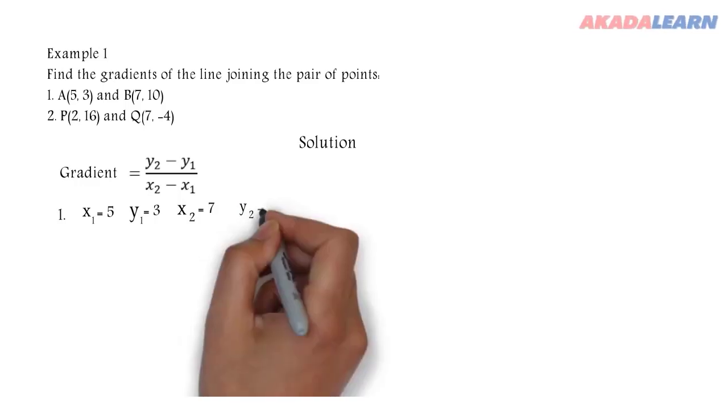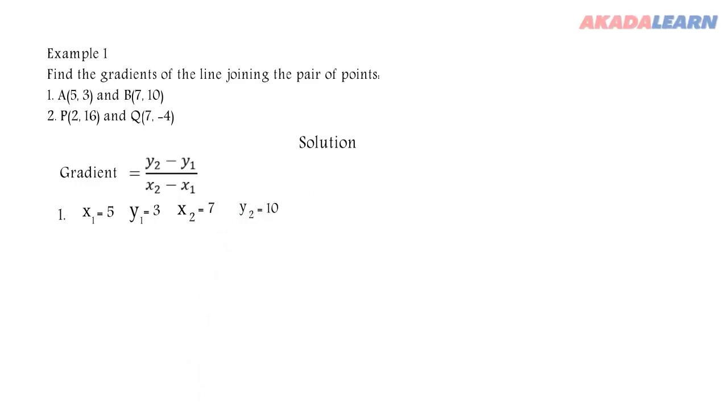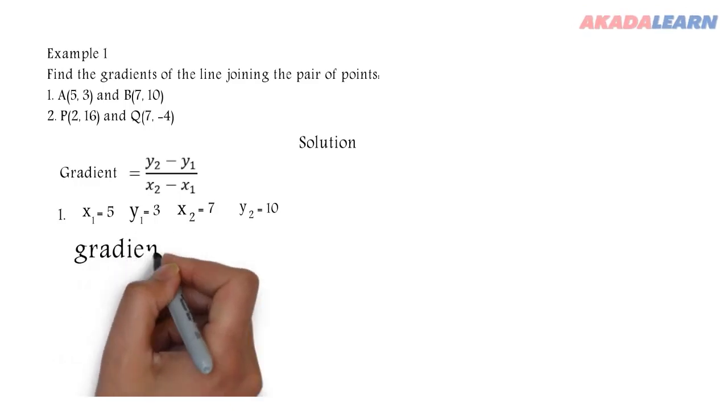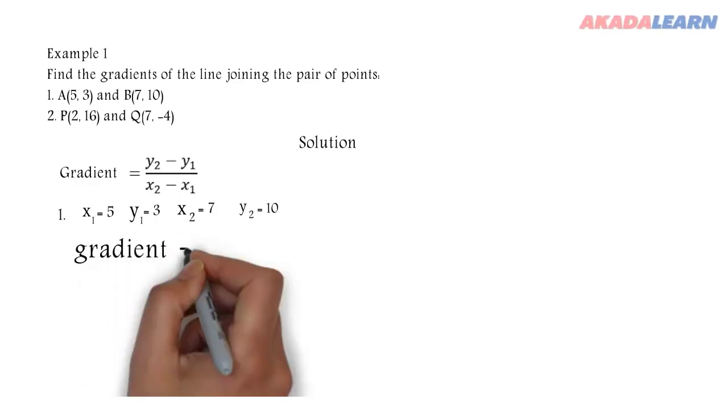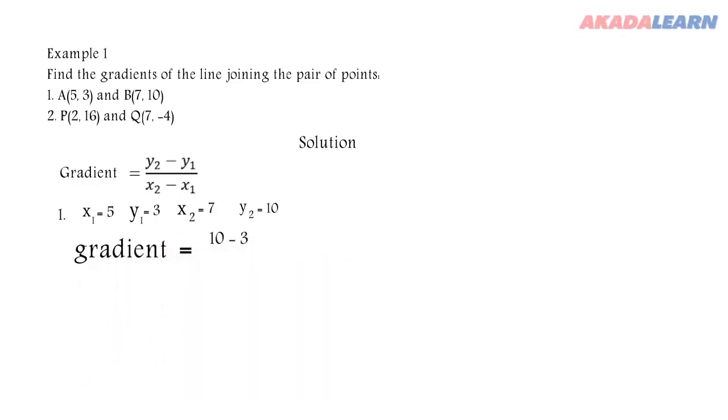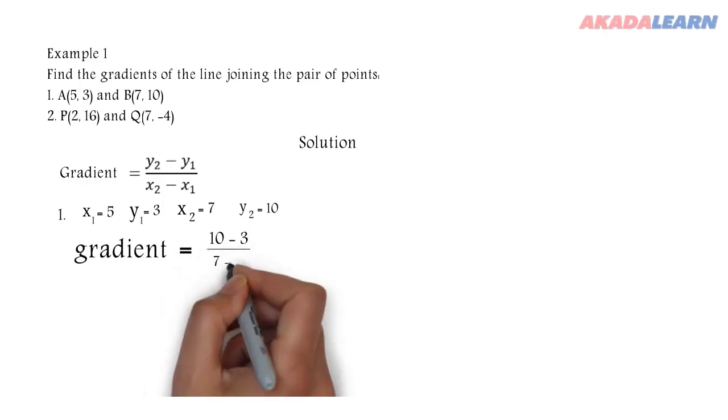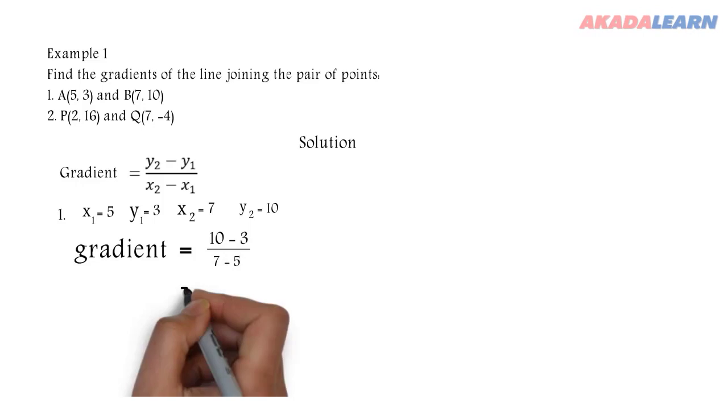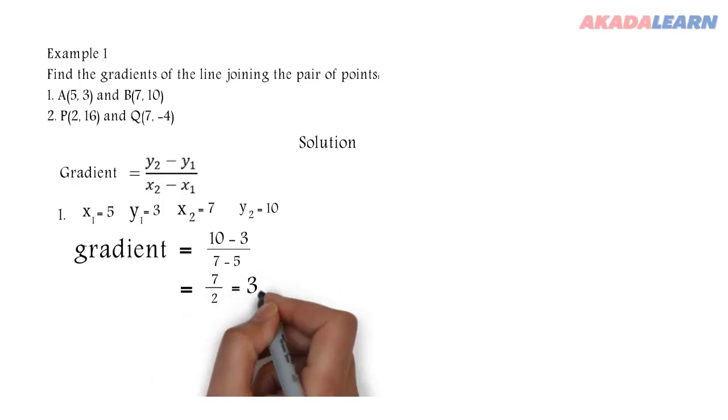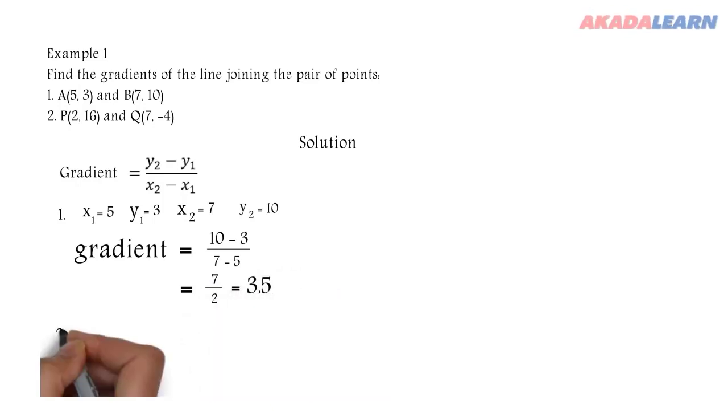We are going to substitute these values into the formula above. So gradient will now be equal to 10 minus 3 over 7 minus 5. So 10 minus 3 is 7, 7 minus 5 is 2, so 7 divided by 2 is 3.5.